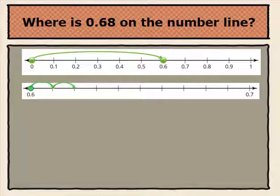Sixty-one hundredths, sixty-two hundredths, sixty-three hundredths, sixty-four hundredths, sixty-five hundredths, sixty-six hundredths, sixty-seven hundredths, and sixty-eight hundredths.